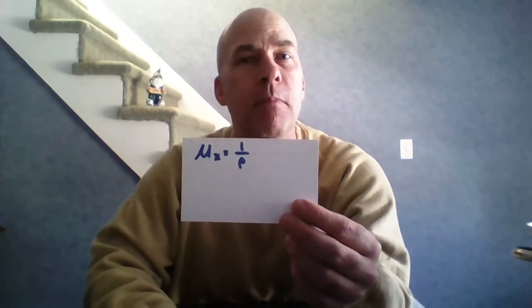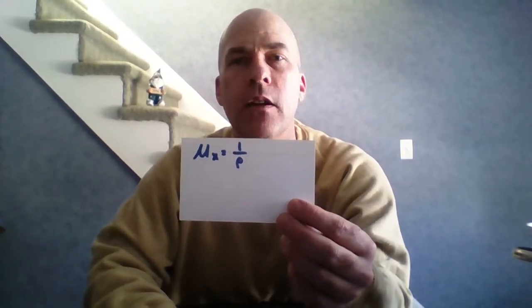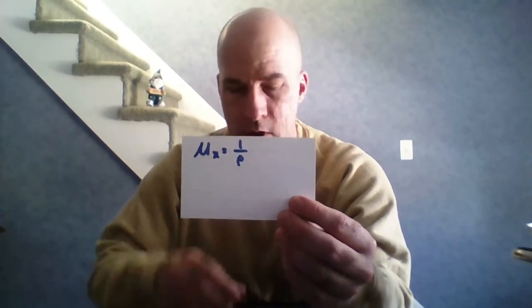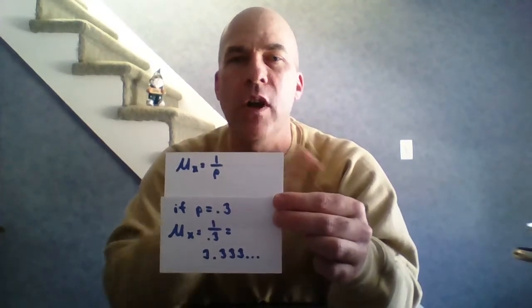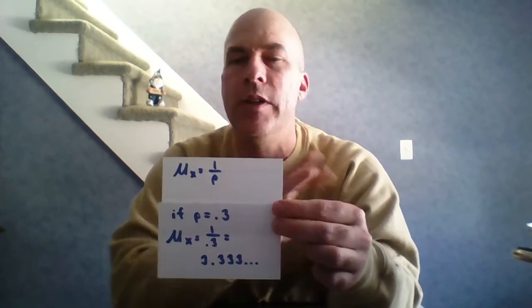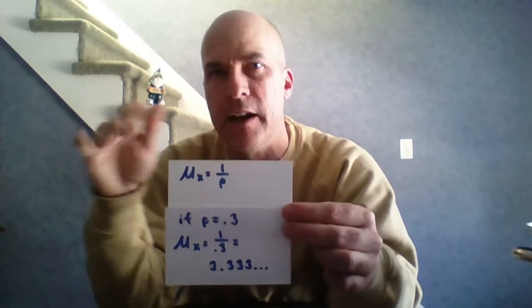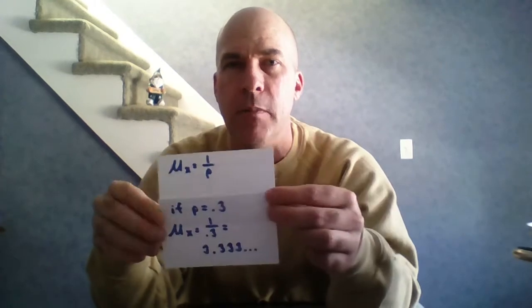We always want to know the mean and standard deviation of these distributions. The mean of a geometric distribution is simply 1/p. So in our problem, with p = 0.3, the mean is 1 ÷ 0.3 = 3.33 repeating. That's the mean formula — on average it takes about 3.3 trials to get a male fish.